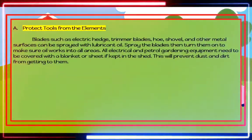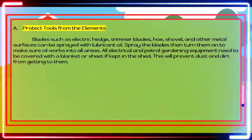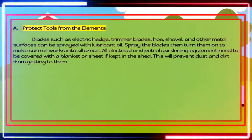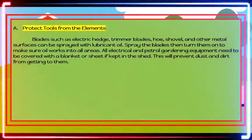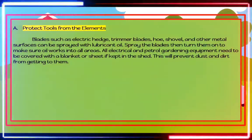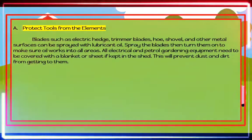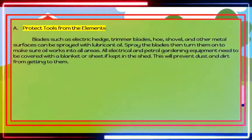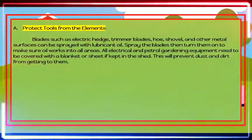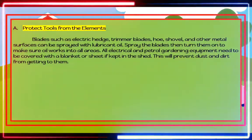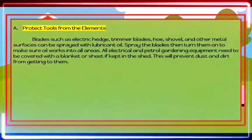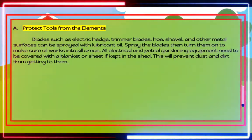Protect tools from the elements: Blades such as electric hedge trimmer blades, hoes, shovels, and other metal surfaces can be sprayed with lubricant oil. Spray the blades then turn them on to make sure oil works into all areas. All electrical and petrol gardening equipment need to be covered with a blanket or sheet if kept in the shed, to prevent dust and dirt from getting to them.